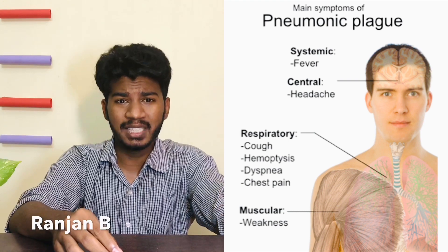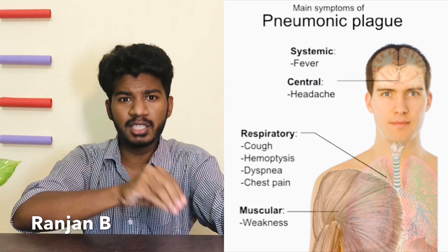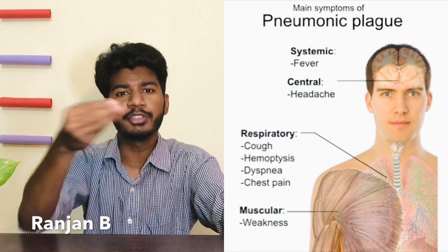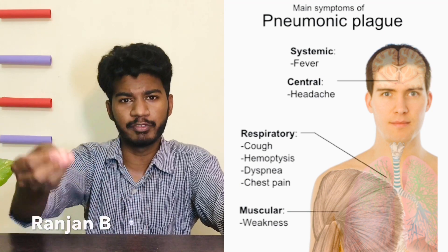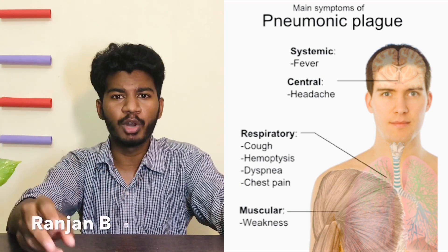If it progresses further, we get Pneumonic Plague. In Pneumonic Plague, the disease is transmitted from person to person, spreading like droplets. This is the most extreme stage. There are three stages in total, each with distinct signs and symptoms.